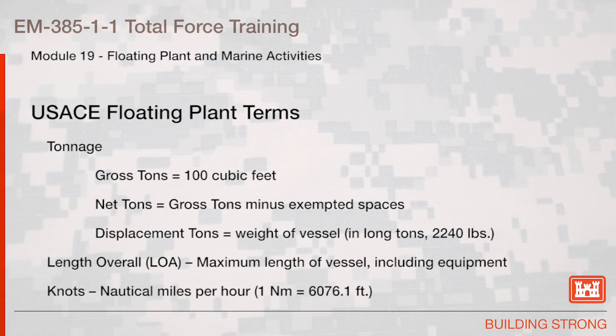The following are some U.S. Army Corps of Engineers floating plant terms. Tonnage: gross tons equals 100 cubic feet. Net tons equals gross tons minus exempted spaces. Displacement tons is the weight of the vessel in long tons, or 2,240 pounds. The length overall, or LOA, is the maximum length of the vessel including equipment. Knots are nautical miles per hour, where one nautical mile equals 6,076.1 feet.